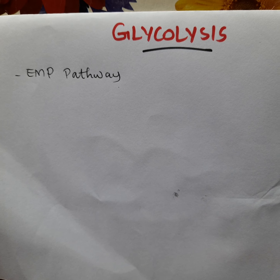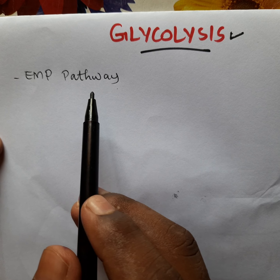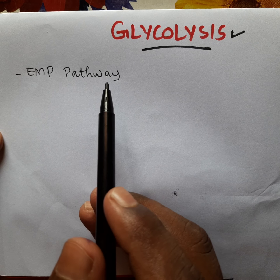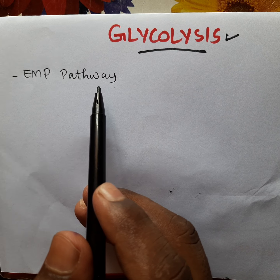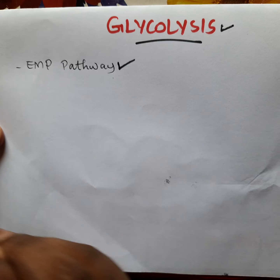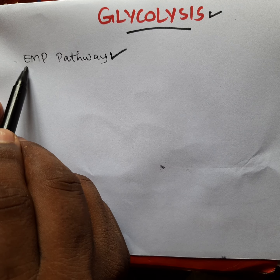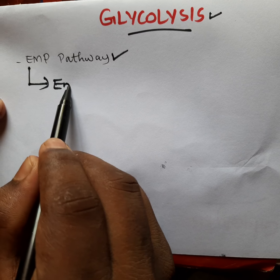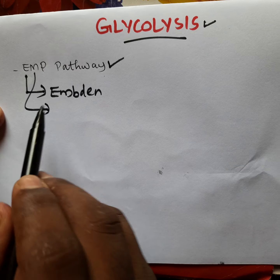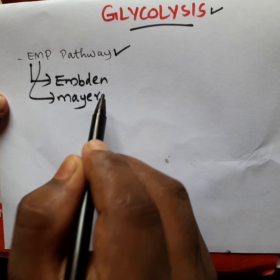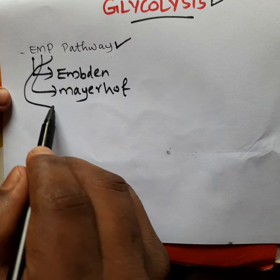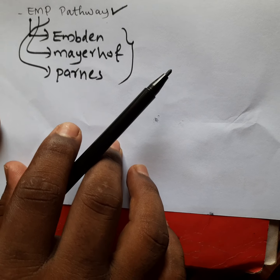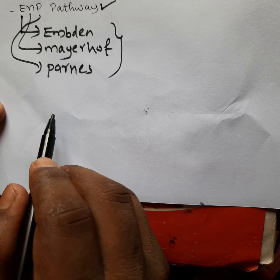Hello students, we are going to discuss glycolysis. This topic comes under Chapter 11, Respiration in Plants. Glycolysis is also known as the EMP pathway, where E stands for Embden, M for Meyerhof, and P for Parnas — the three scientists who discovered this process.